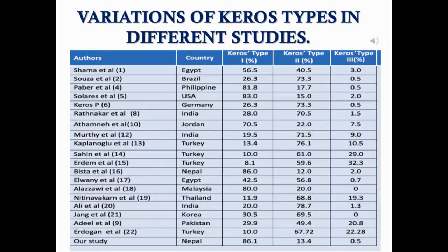This chart shows the different heights of the olfactory fossa as per Keros classification across different countries worldwide. In Germany, India, and Turkey, Type 2 is more common. In Nepal, USA, Philippines, and Egypt, Type 1 is more common, as shown in the figure.